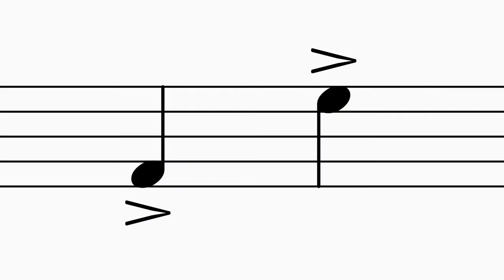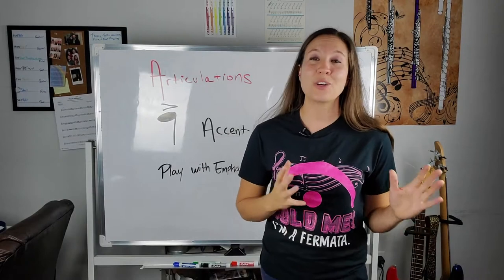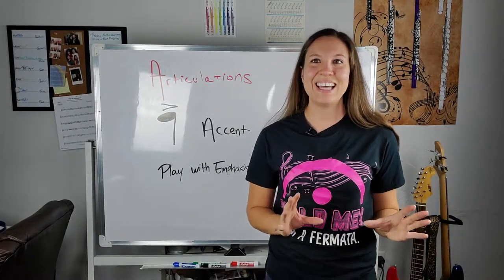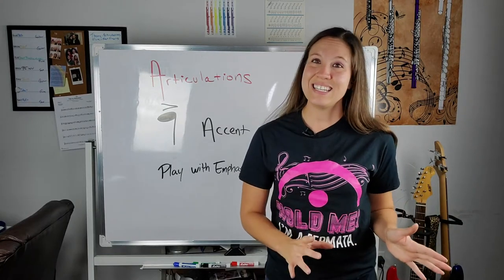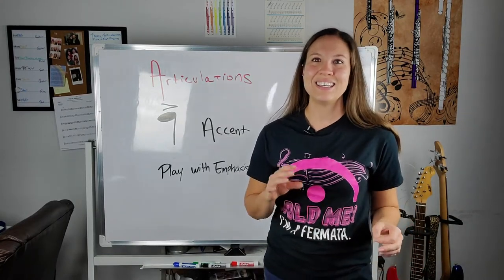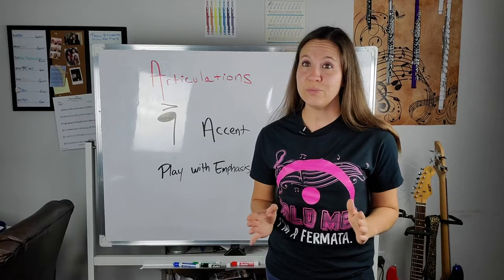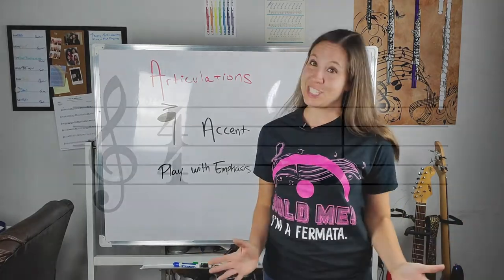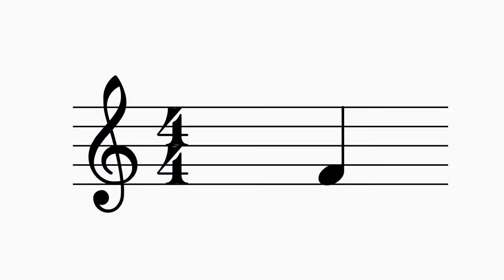Let's move on to our next articulation. If you see this little less-than type sign above or under the note, just like these, this is an accent. An accent tells us when to play the note with emphasis. So our quarter note sounds like this: ta. Now when there is an accent, it's more like this: ta. See how there's an attack on the note? Let's listen to a real instrument. Here is the standard quarter note. And now here's the accent.